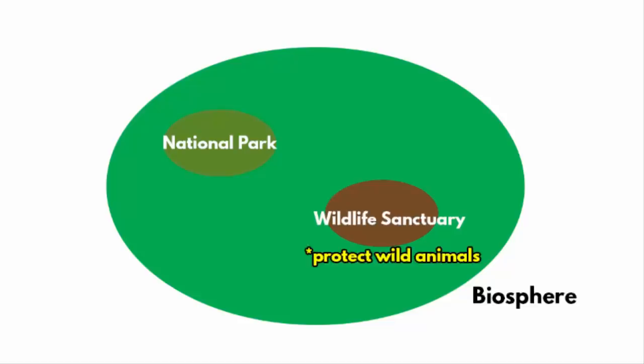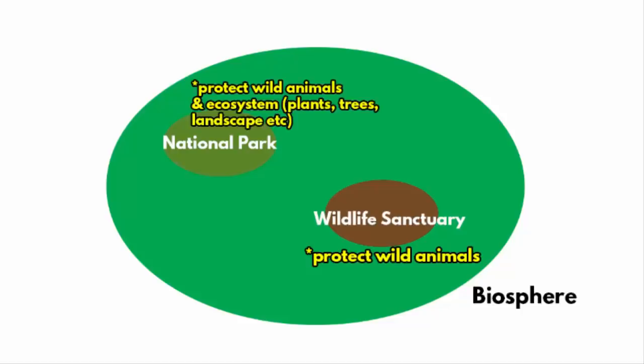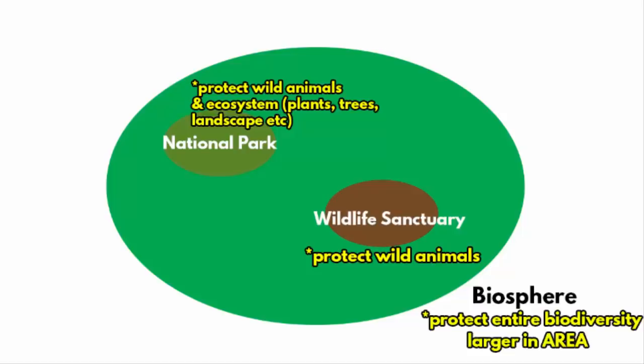The purpose of a wildlife sanctuary is to protect wildlife — it could be a tiger, elephant, rhinoceros, anything. And the purpose of a national park is to protect not only wildlife, but the entire ecosystem, which consists of natural vegetation, landscape, etc. The purpose of a biosphere reserve is to protect the entire biodiversity, which means a wildlife sanctuary and a national park together are part of biodiversity. In other words, a biosphere reserve is a much larger area, and within that reserve you will find many national parks and wildlife sanctuaries.